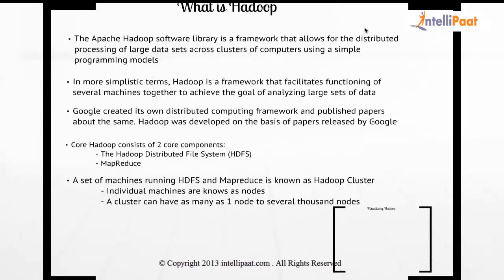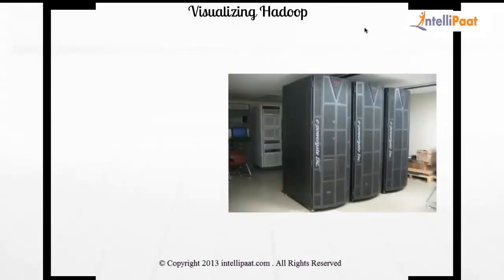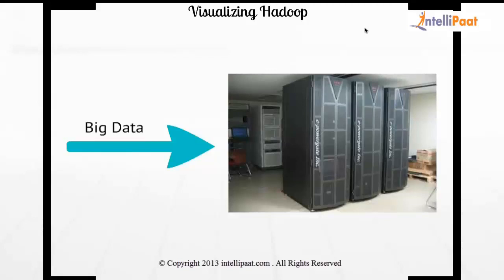The biggest cluster right now is with Cloudera, with a 4,400 to 4,500 node cluster. To visualize what Hadoop is: these are multiple machines that take your big data and provide you processing plus storage. Multiple machines working together to provide processing and storage services for data that is really, really huge — that's Hadoop.